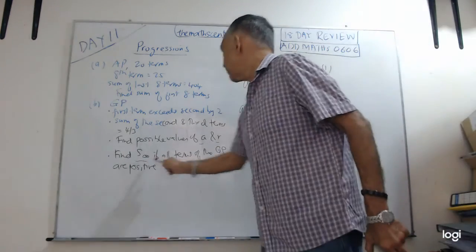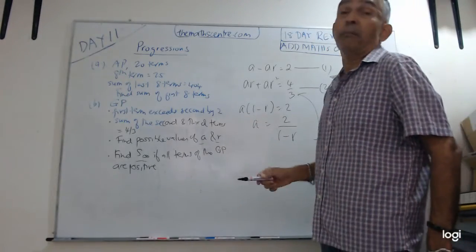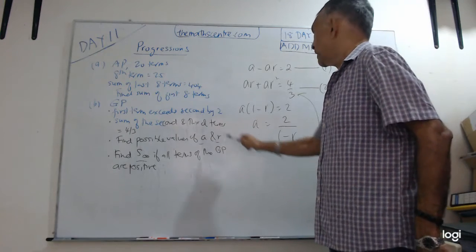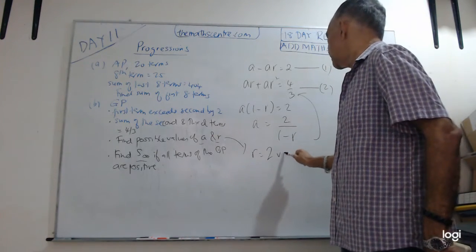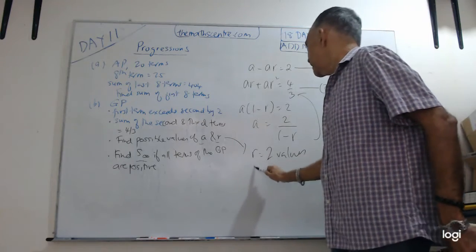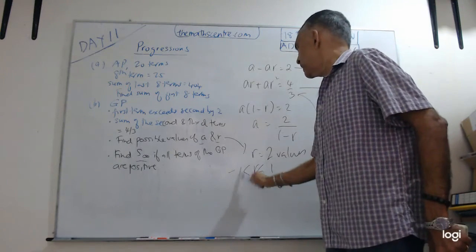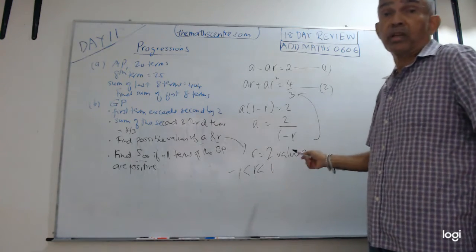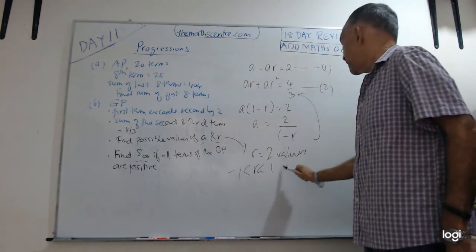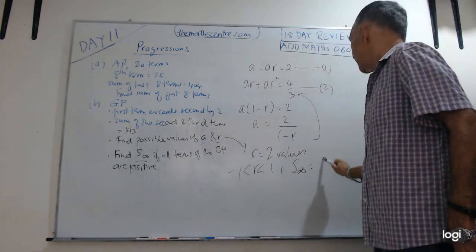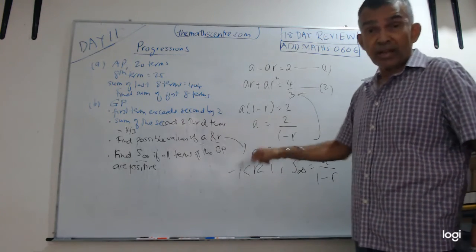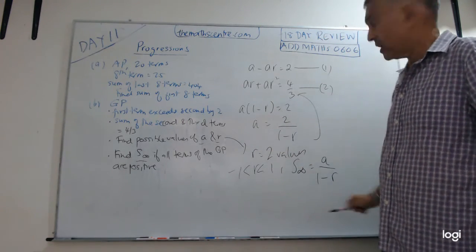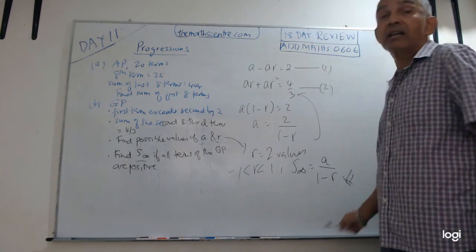They ask you to find S infinity if all the terms of the GP are positive. Which means from here you have two values of r. You choose the value of r that's between 1 and minus 1. Choose the value of r because only if your value of r is between 1 and minus 1, you're going to get S infinity, which is a over 1 minus r. So with that value of r, find the value of a, plug in, and you are done.